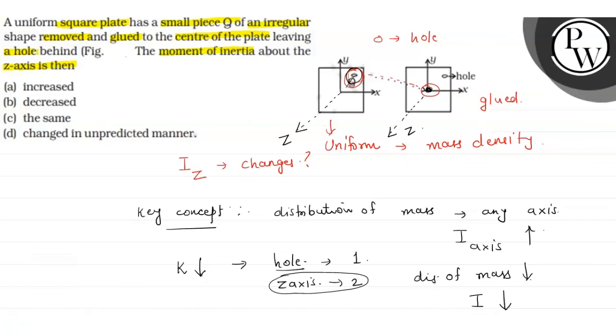So if we are asked the question, the right answer will be option B, that is decreased. Hope you understood it well, best of luck.